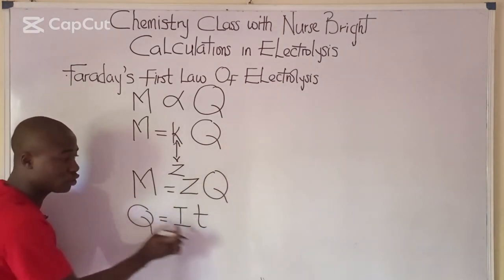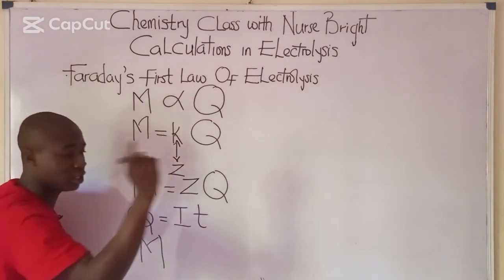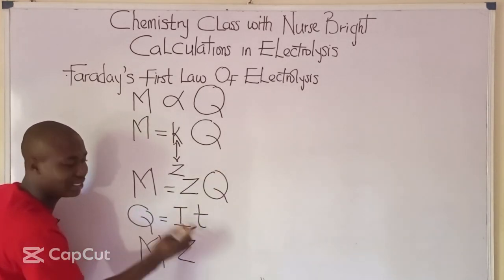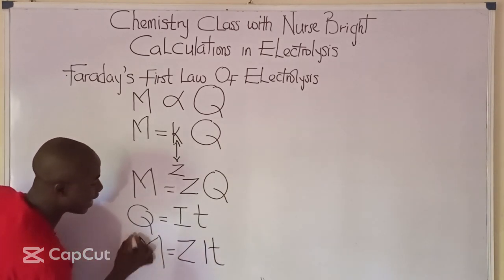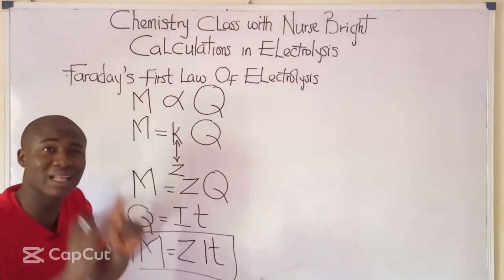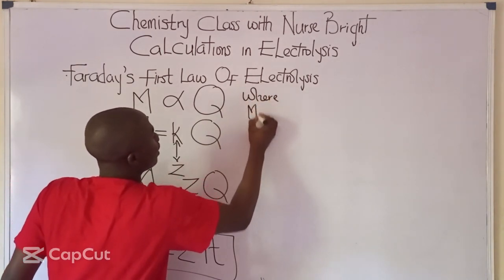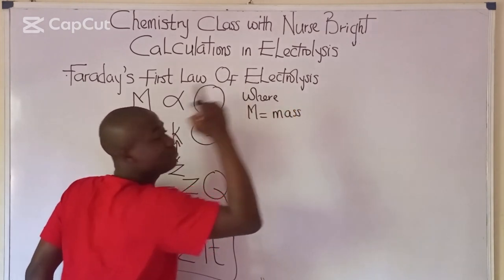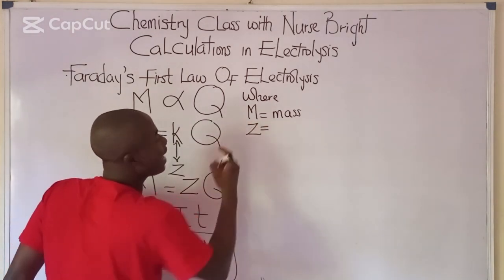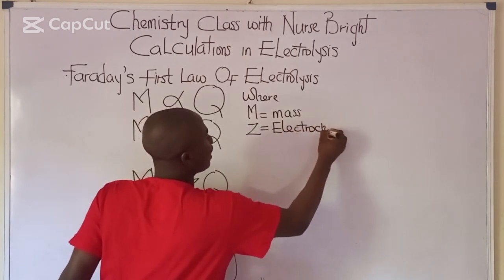Introducing Q = IT into the expression, we arrive at the final formula for solving questions on Faraday's first law of electrolysis: M = ZIT. Here M is mass (in grams), Z is the electrochemical equivalent, I is current, and T is time.